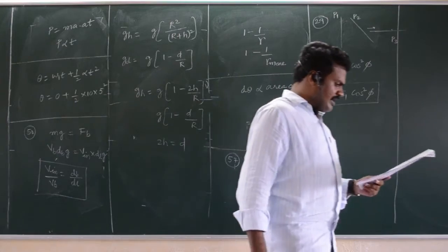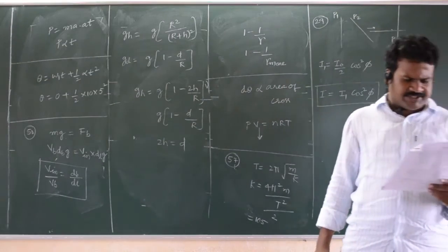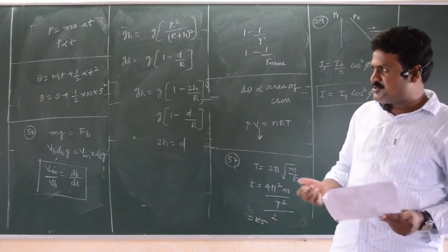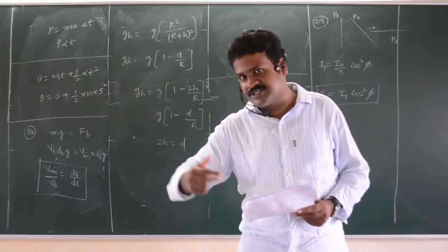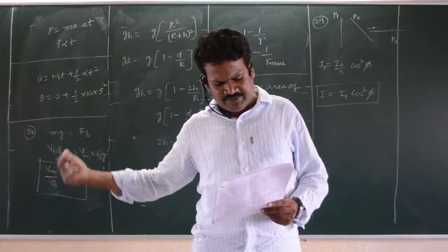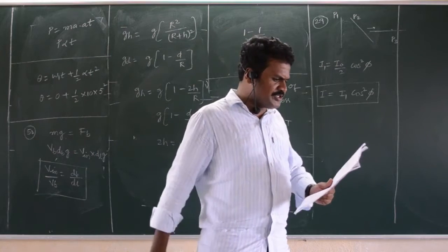Next, a train is whistling at constant frequency. So, when it is approaching towards you, that frequency increases, reaches the peak value. When it is going back, frequency decreases. Therefore, answer is B.